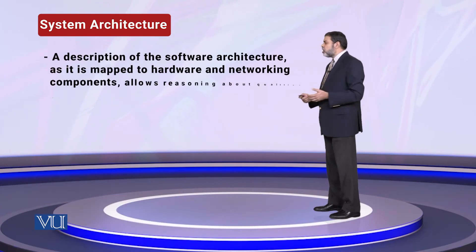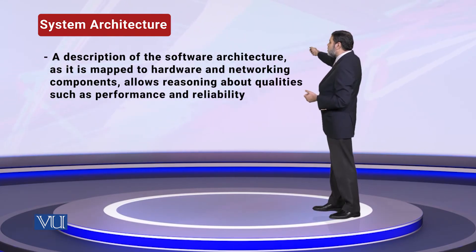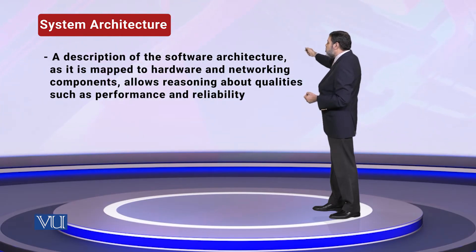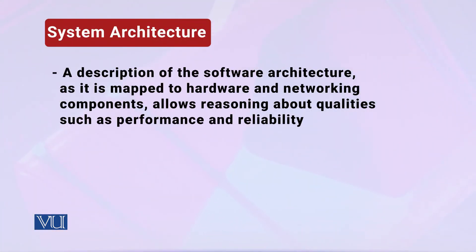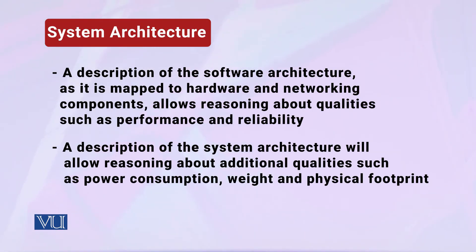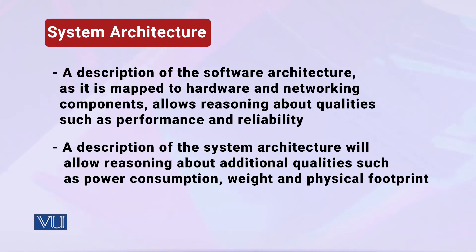A system architecture is a description of software architecture as it is mapped to hardware and networking components. It allows reasoning about qualities such as performance and reliability. Additionally, a system architecture description allows reasoning about further qualities such as power consumption, weight, and physical footprint of the infrastructure requirements.